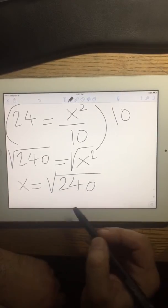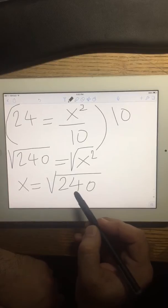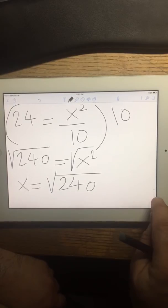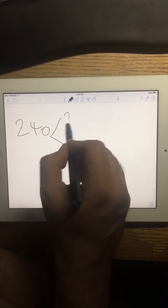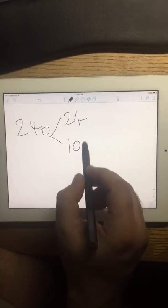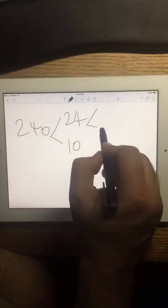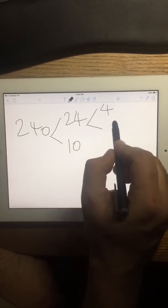Now you have to simplify as much as possible. So if you try to do that, 240 is 24 times 10, and this gives me 4 times 6.